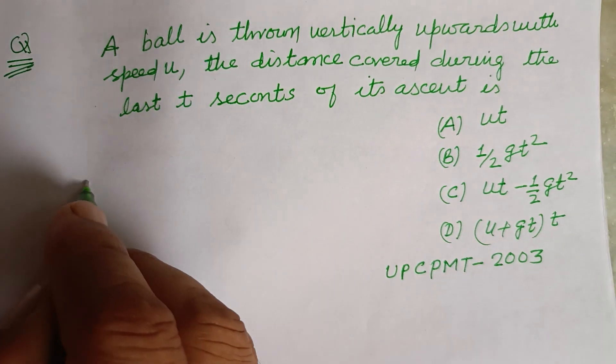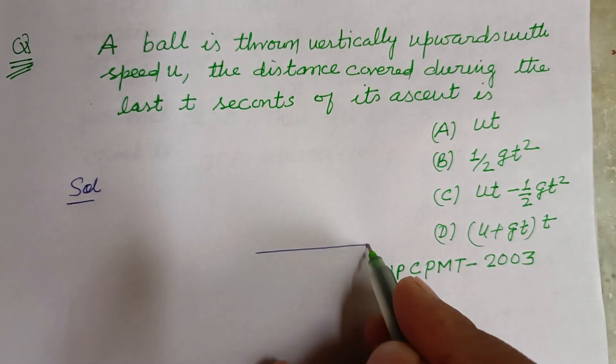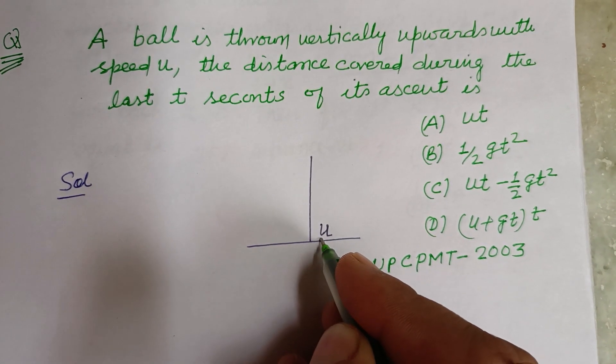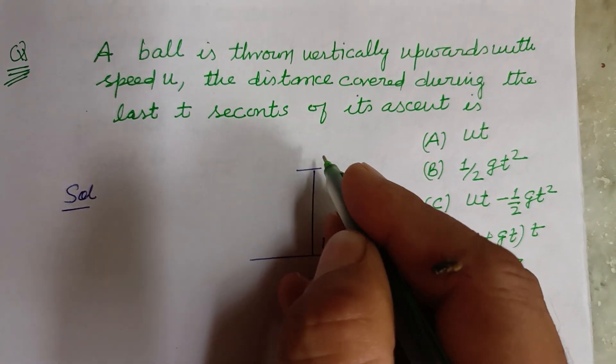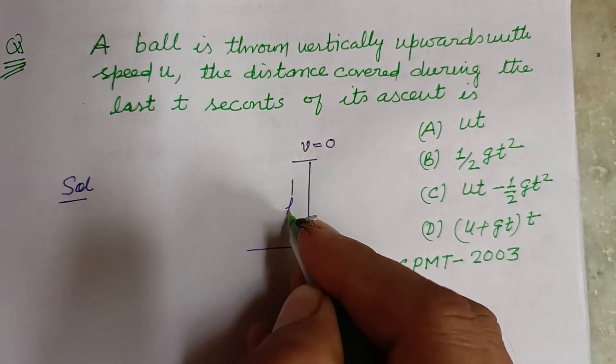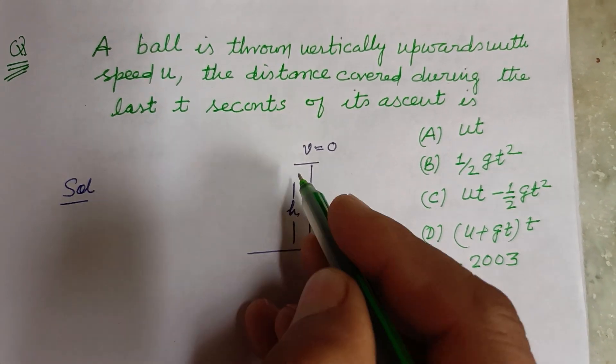So students, here a ball is thrown vertically upward with initial velocity u. At the highest point, the velocity becomes zero. Let the height or distance covered by it be h.